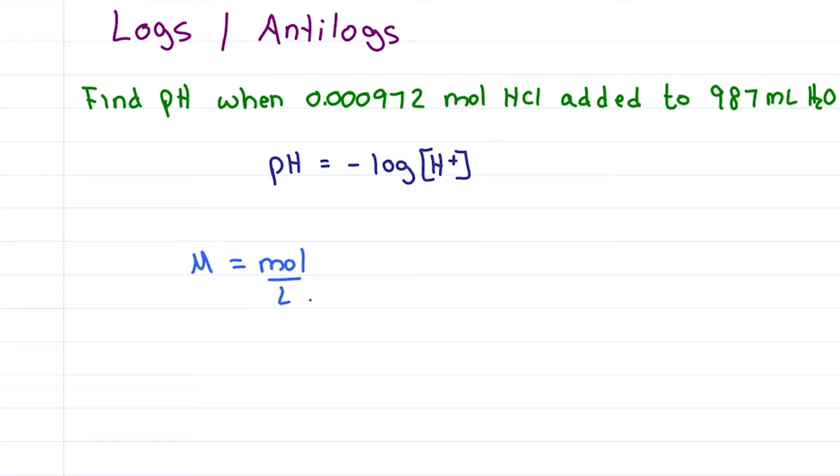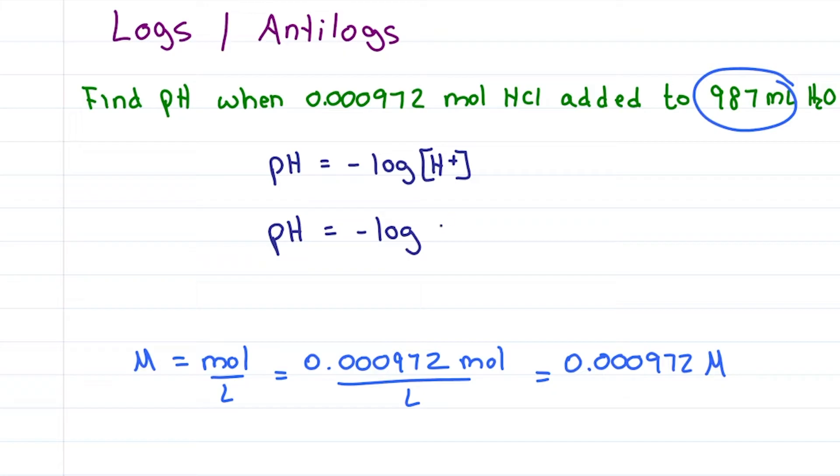If molarity is moles per liters and 1 liter is a thousand milliliters, we'll call this close enough for a concentration of 0.000972 molar. That means our pH is equal to negative log this entire mess.